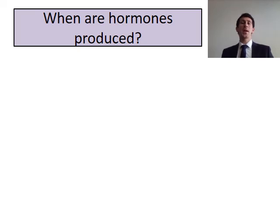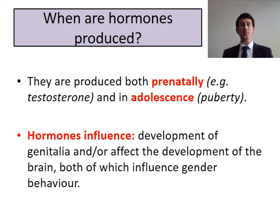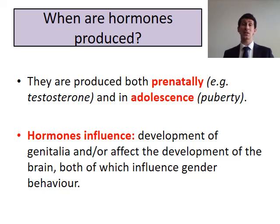Hormones are produced prenatally, while you're in the womb, and also during adolescence or puberty. Hormones influence a range of different things: the production of genitalia prenatally, the development of your brain — if testosterone is released in the womb, it changes the structure and neural pathways of the brain prenatally. It also influences gender behaviour. High levels of testosterone have been linked to higher levels of aggression, so hormones have a really large influence on a range of traits, behaviours, and attitudes.